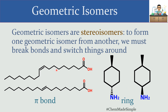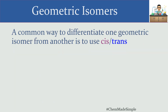These molecules are not mirror images of each other, and that is a special type of stereoisomer that we call a diastereomer. That's the reason geometric isomers are a type of diastereomer — they're not mirror images of each other.